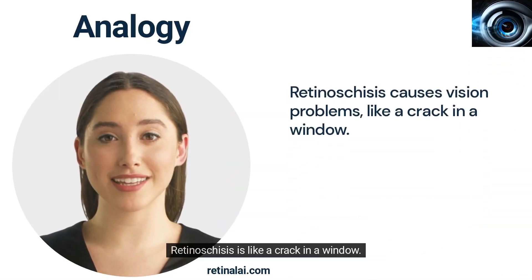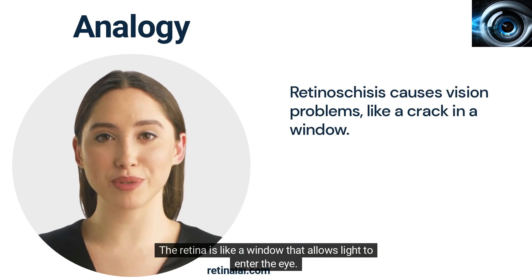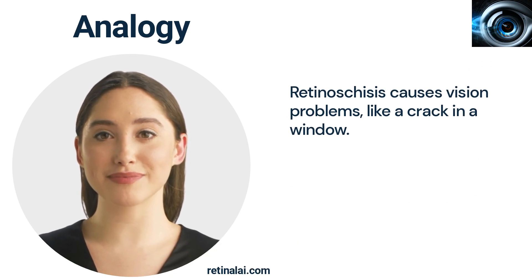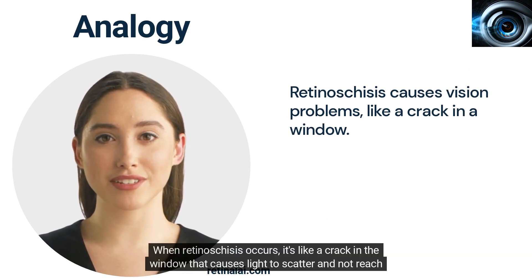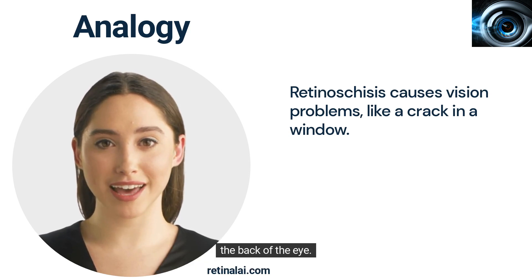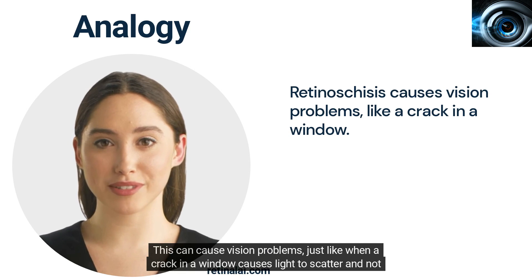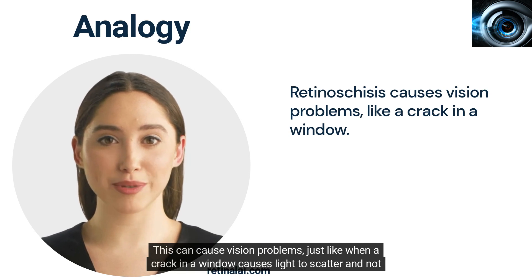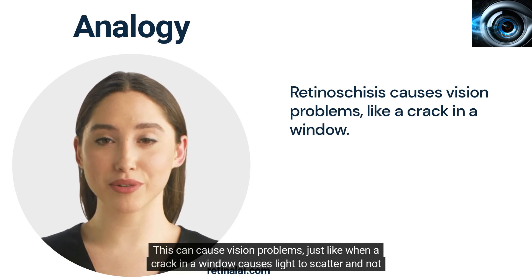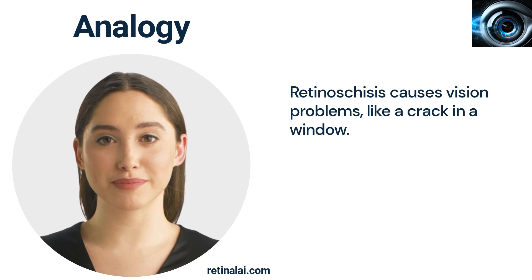Retinosteces is like a crack in a window. The retina is like a window that allows light to enter the eye. When Retinosteces occurs, it's like a crack in the window that causes light to scatter and not reach the back of the eye. This can cause vision problems, just like when a crack in a window causes light to scatter and not reach the inside of a room.